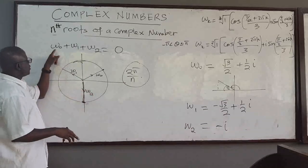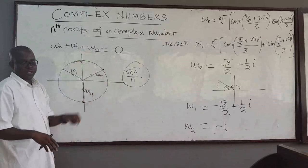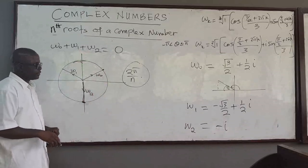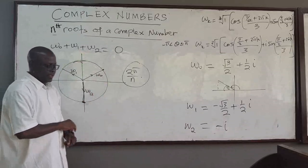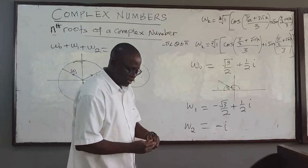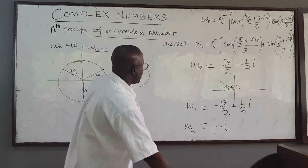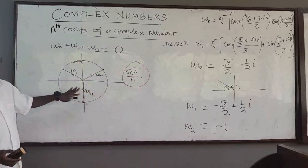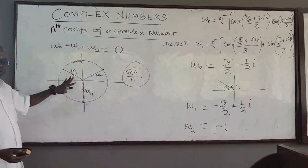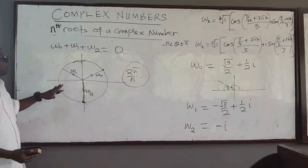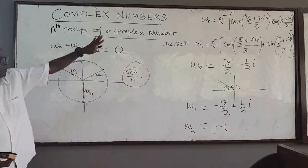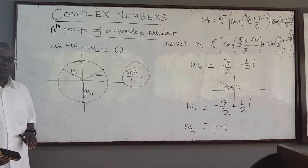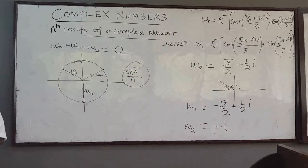The third thing is that when you add the roots, you get zero. In the next lecture, I'll solve another example of how to find the nth roots — the fifth roots of a complex number — applying this same formula to find the roots.